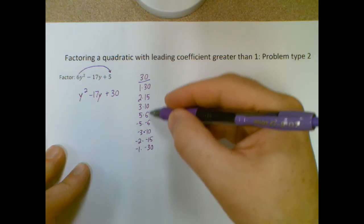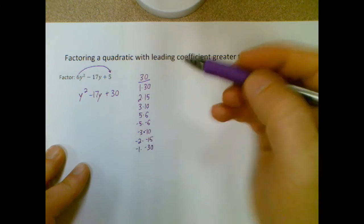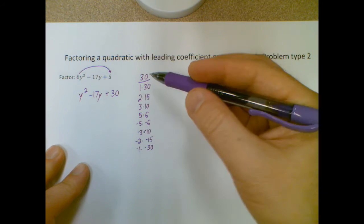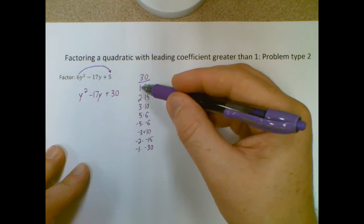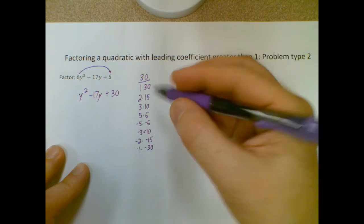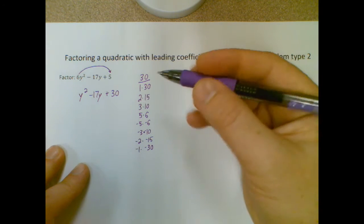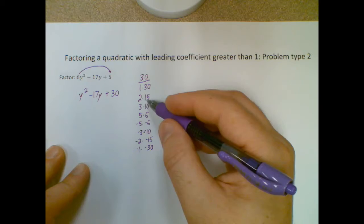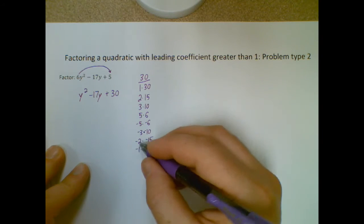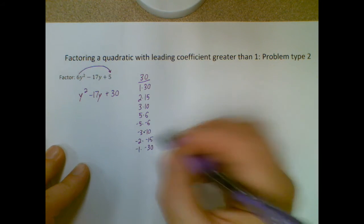I'm looking for which one of these pairs adds up to my middle number, negative 17. What I mean is I'm adding 1 plus 30 is 31, that doesn't work. 2 plus 15 is 17, not negative 17, so that doesn't work. If you keep going, eventually you'll find that negative 2 and negative 15 is the pair we're looking for.